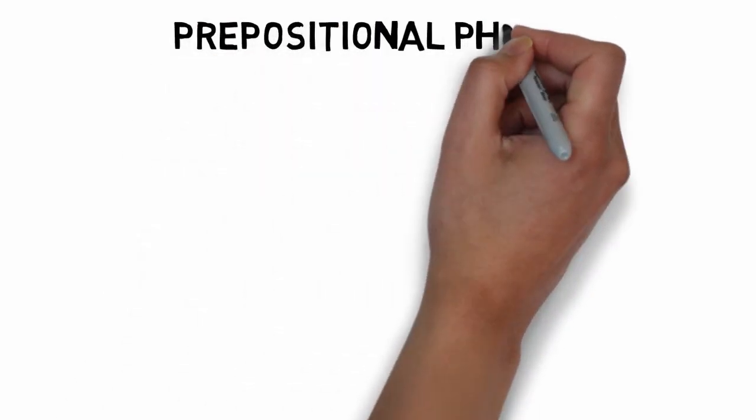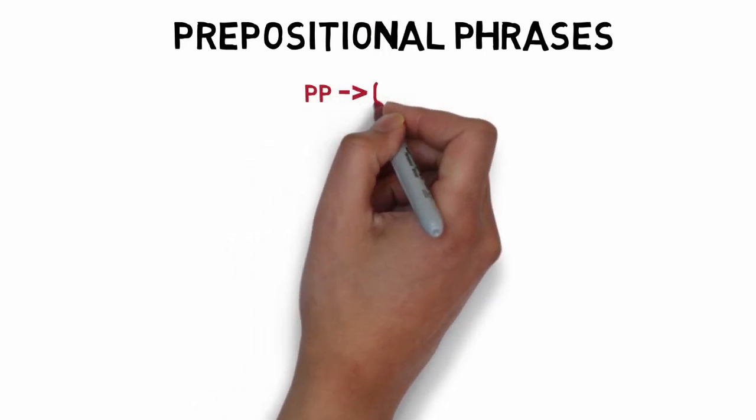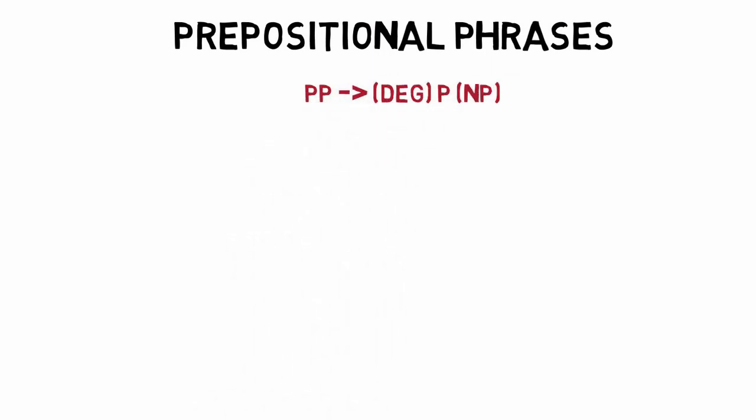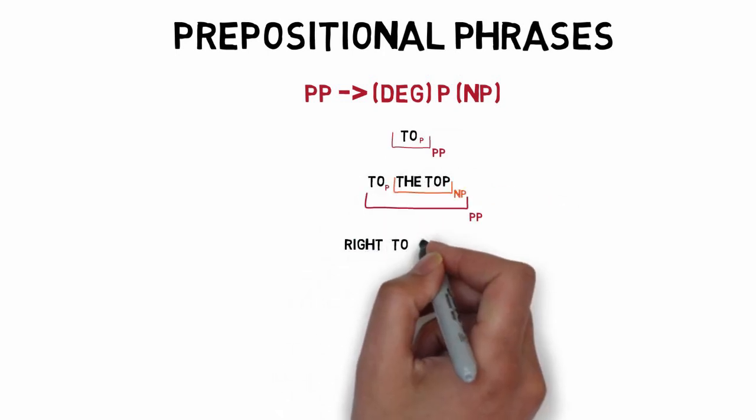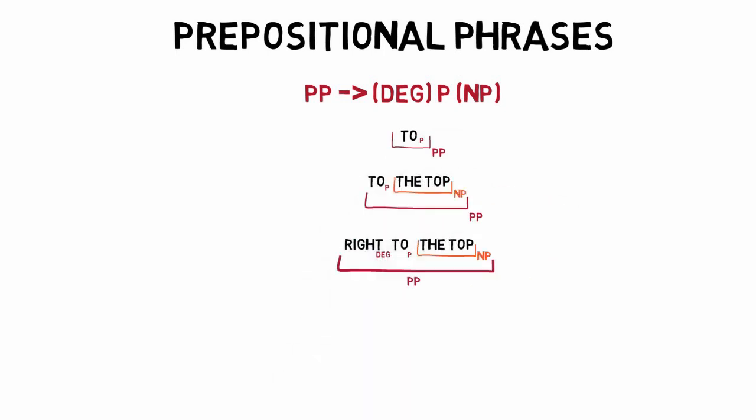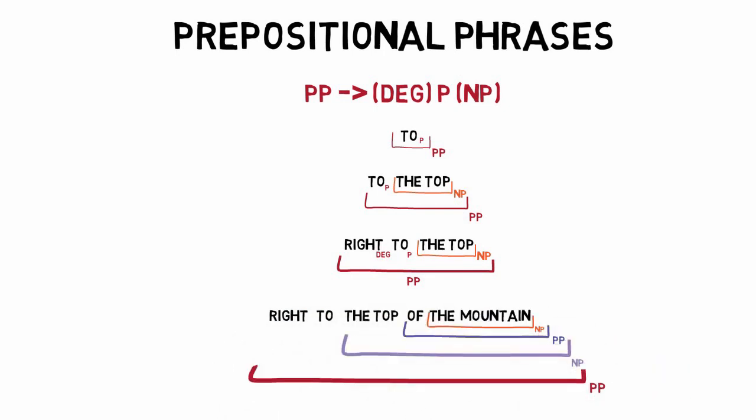Prepositional phrases are made up of an optional degree word, an obligatory preposition, and an optional noun phrase, but only one of them. This grammar generates the phrases or sentences: to, to the top, right to the top, right to the top of the mountain, where 'right' is the specifier in each of these cases.